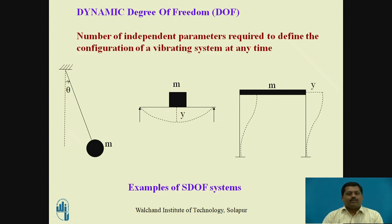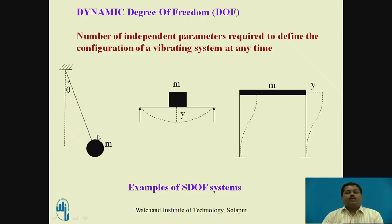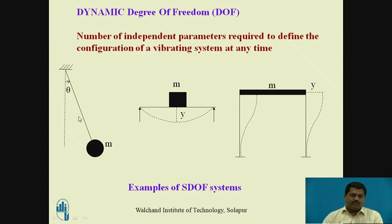The next concept is dynamic degree of freedom. The definition is: the number of independent parameters required to define the configuration of a vibrating system at any time. For the pendulum example — mass m connected by an inextensible string — the independent parameter that defines the configuration at any time is theta. So theta is the degree of freedom in this pendulum system.